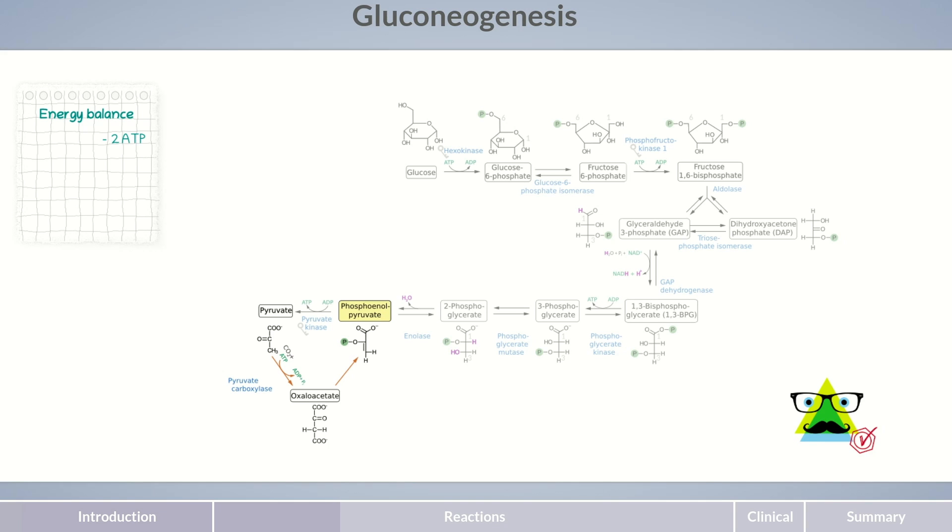Subsequently, oxaloacetate is converted by phosphoenolpyruvate carboxykinase to phosphoenolpyruvate. The decarboxylation of oxaloacetate, that is, the cleavage of its carboxylic acid group, is strongly exergonic. It provides the energy required for forming phosphoenolpyruvate. However, the decarboxylation reaction again requires energy, which is provided in the form of GTP.